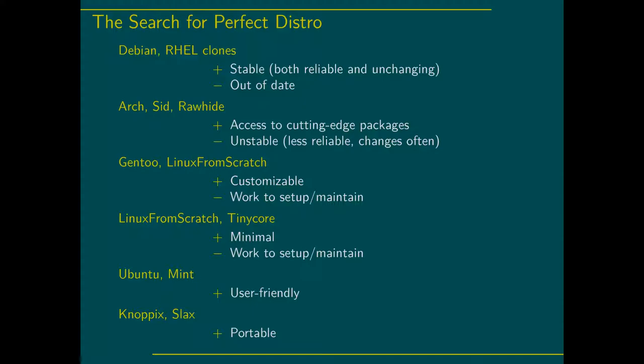However, stability comes at the expense of being out of date. If new hardware comes out, those distros probably won't have support immediately. At the other extreme, something like Arch or Debian SID will be cutting-edge — any new package comes out very quickly, but they're a little less reliable and require keeping up with changes like the Arch user migration.